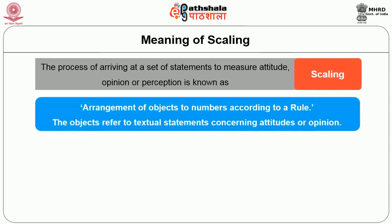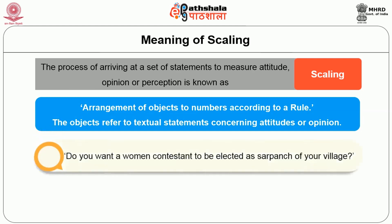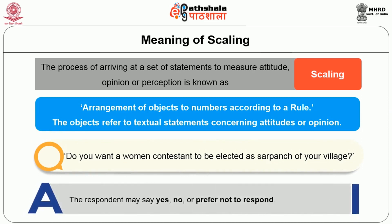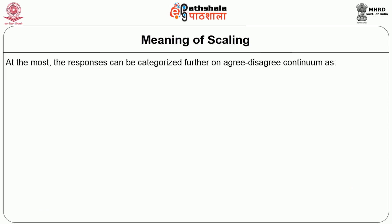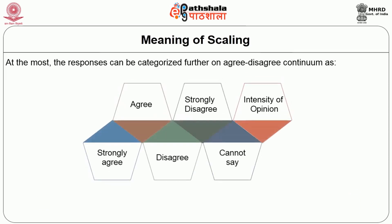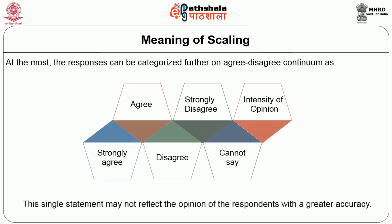Scaling may be defined as the arrangement of objects to numbers according to a rule. Here, the objects refer to textual statements concerning attitudes or opinions. The reason for the use of a set of statements is simple. For example, a single statement like 'do you want a woman contestant to be elected as sarpanch of your village?' — the respondent may say yes, no, or prefer not to respond. The responses can be categorized on an agree-disagree continuum, but this single statement may not reflect the opinion of the respondent with greater accuracy.